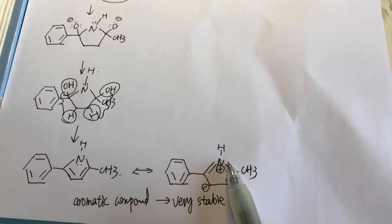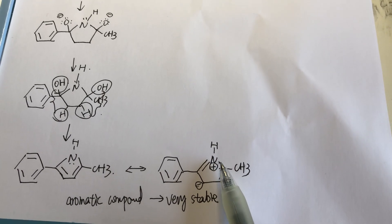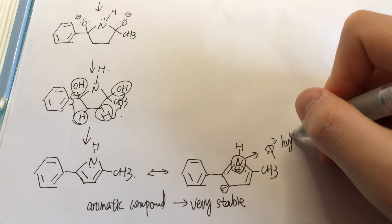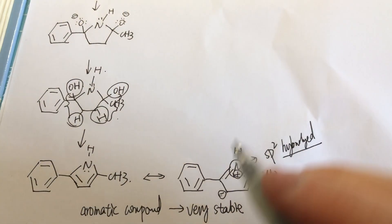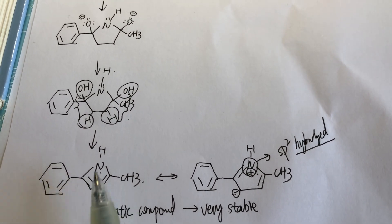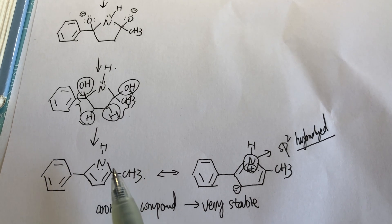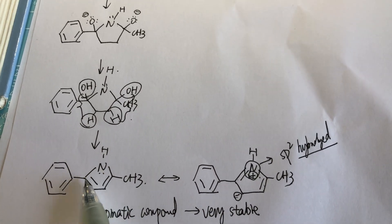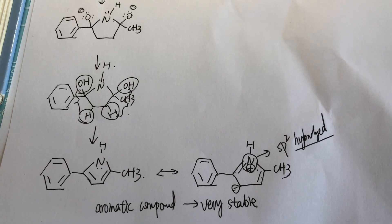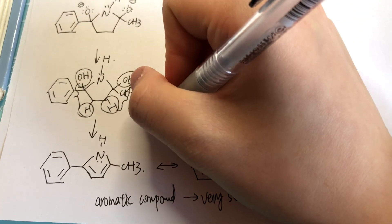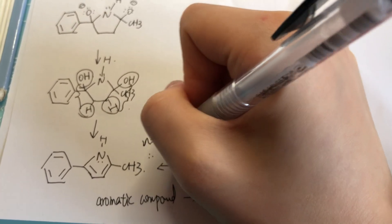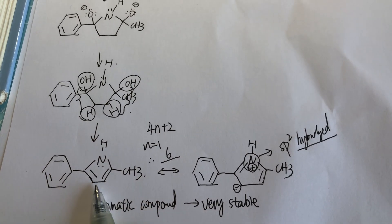You can see the nitrogen needs an unhybridized p orbital, and its lone pair of electrons is joining the resonance. Those pi electrons — you can count: one, two, three, four, five, six — there are six pi electrons involved. According to Hückel's rule, 4n + 2, when n is equal to 1, we get exactly 6 pi electrons. Thank you.